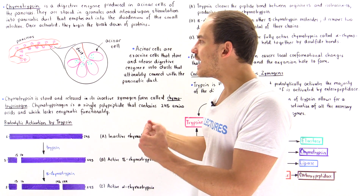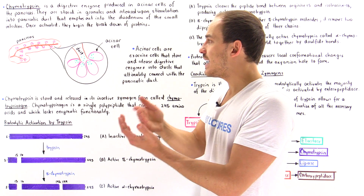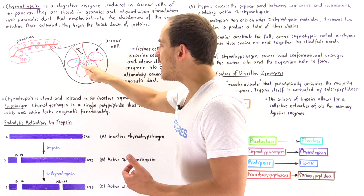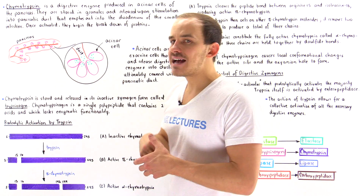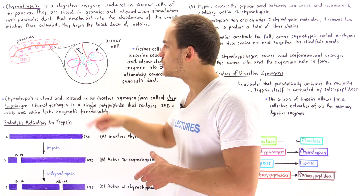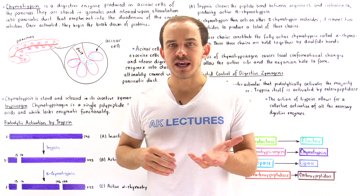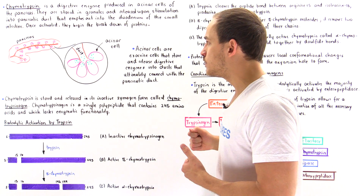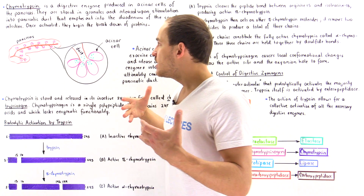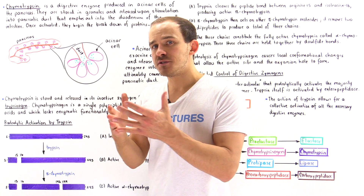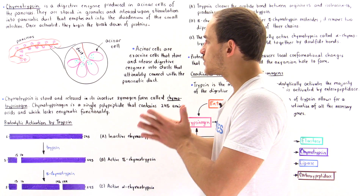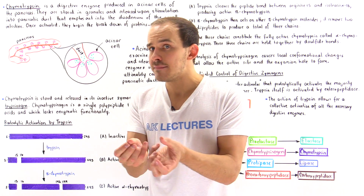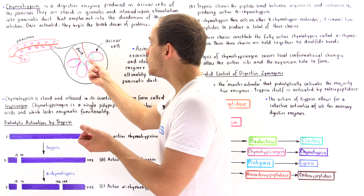These granules containing the zymogens accumulate on the apex side of the acinar cells. When the cell is stimulated by a hormone or an action potential, the granules exit the cell via exocytosis and release all the zymogens into the duct.